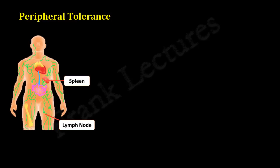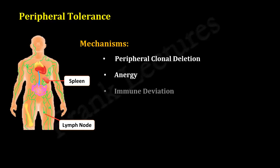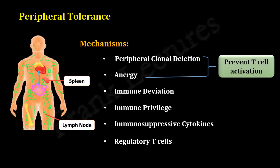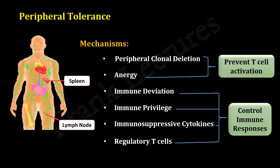The main mechanisms of peripheral tolerance involve peripheral clonal deletion, anergy, immune deviation, immune privilege, immunosuppressive molecules, and regulatory T cells. Among these, the first two prevent autoreactive T cells from getting activated. If somehow the autoreactive T cells get activated, the remaining mechanisms are responsible for controlling the immune response.